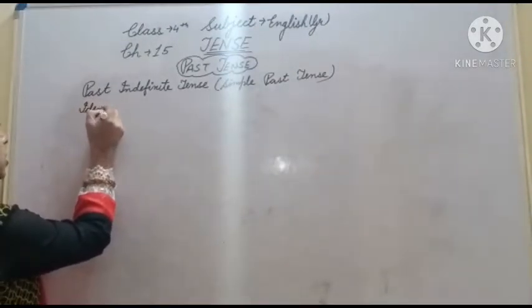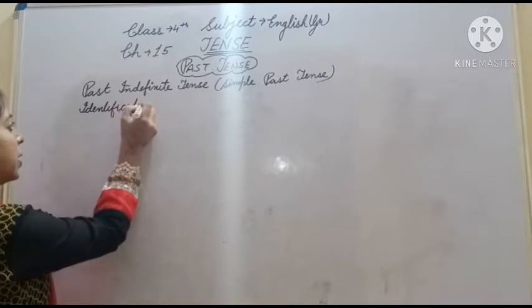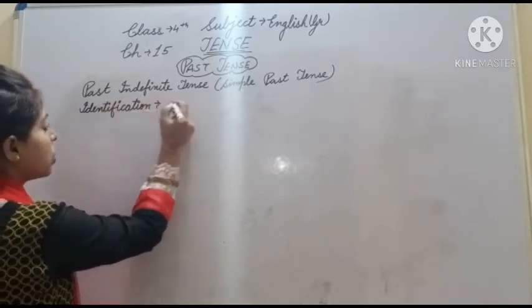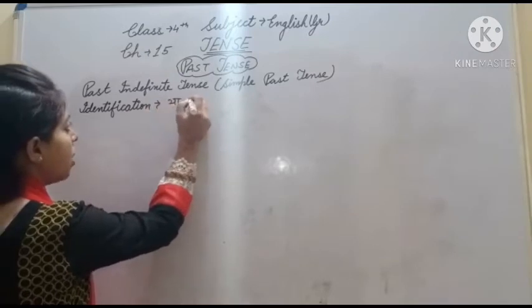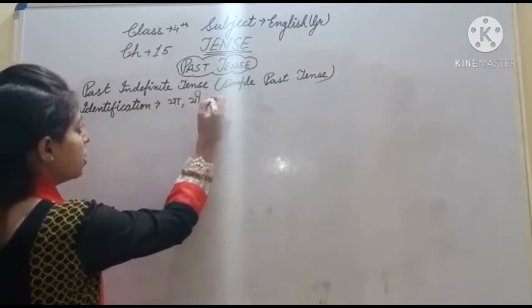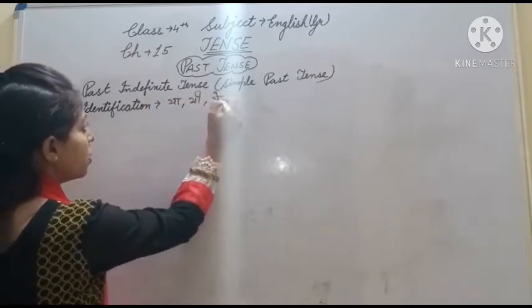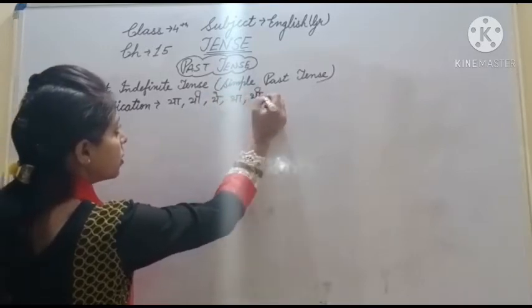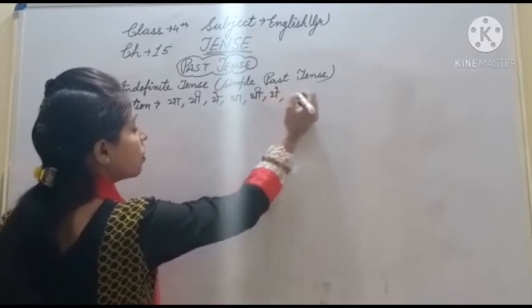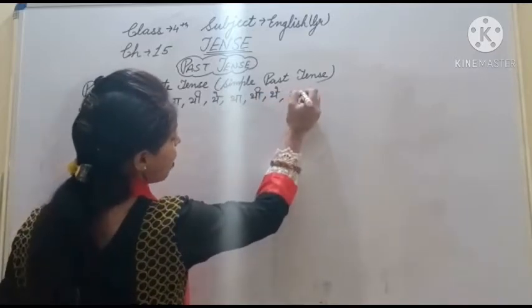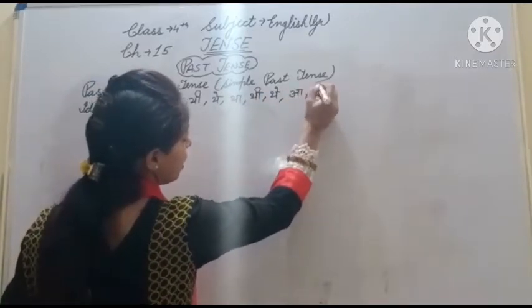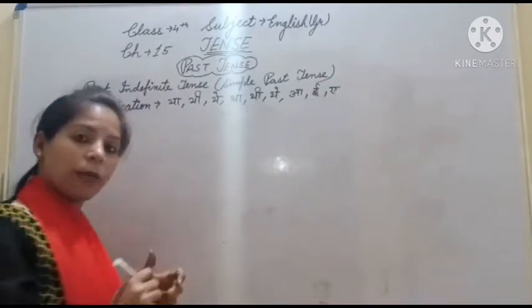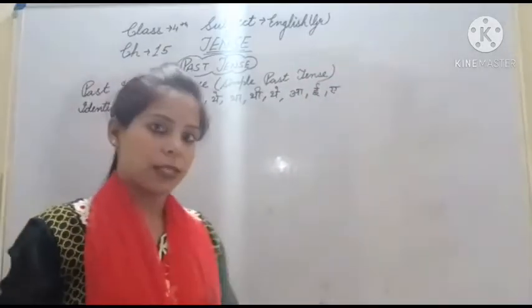Identification — what do we say? Identification means पहचान। इनकी पहचान क्या होती है? जिन वाक्यों के अंत में या, ही, ये, था, थी, थे, आ, इ, ए आता हो, वो होते हैं हमारे past indefinite tense। ठीक है बिटा?